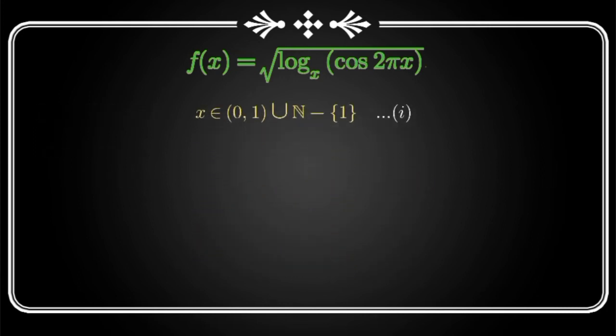Now one condition will also come that x should be greater than 0 and not equal to 1 because x is in base of log, right? But this thing we already covered in condition 1 by taking two cases of x where in one case x was belonging to 0 to 1, 0 and 1 not included, and in second case x was greater than 1. So we need not consider this condition again.